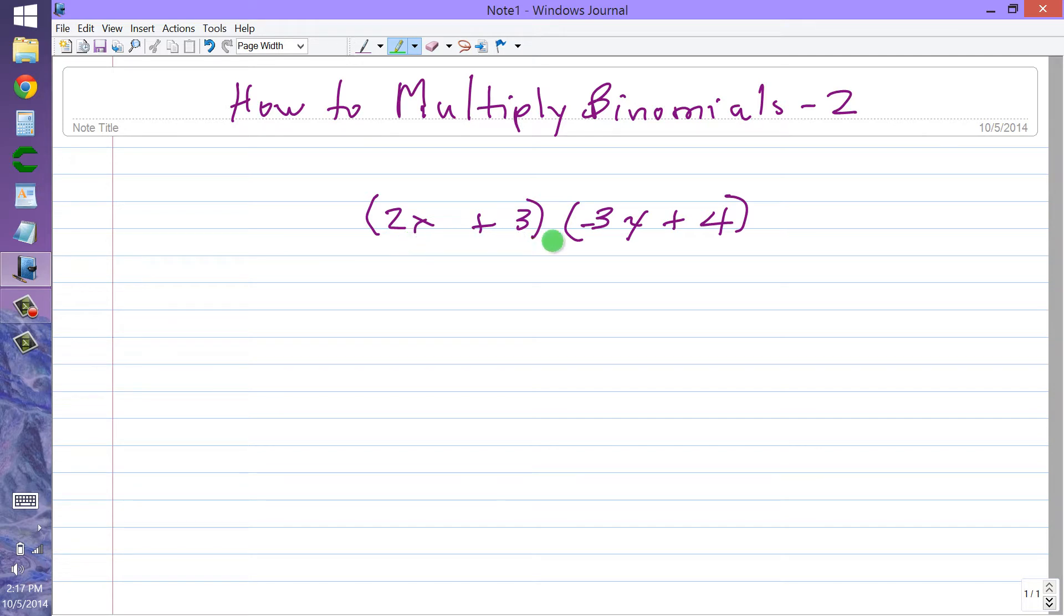When you need to multiply two binomials by each other, a sum of two elements and another sum of two elements, you multiply this by that, and then add this times that, and then add this times that, and then add this times that.